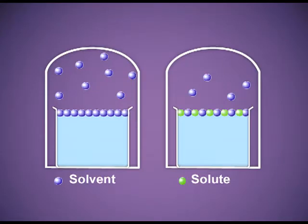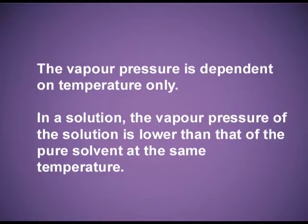Now let's discuss vapour pressure, the lowering in vapour pressure, and Raoult's law. First, you must know there are two types of liquids: volatile and non-volatile. Volatile liquids evaporate; non-volatile liquids do not change into vapours. For a pure volatile solvent taken in an evacuated vessel, it changes into vapours, and these vapours exert pressure on the surface of the liquid. The pressure exerted by these vapours at equilibrium is known as vapour pressure. Vapour pressure is dependent on temperature only.